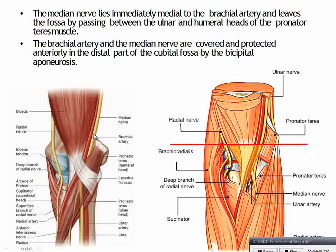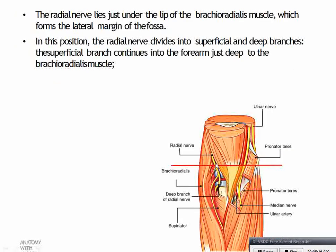Both the median nerve and brachial artery are protected by the bicipital aponeurosis, which is an extension of the biceps brachii muscle during its insertion. It extends to the posterior border of the ulna. The radial nerve lies just deep to the brachioradialis muscle, which forms the lateral margin of the fossa, and here it divides into a superficial branch and a deep branch.